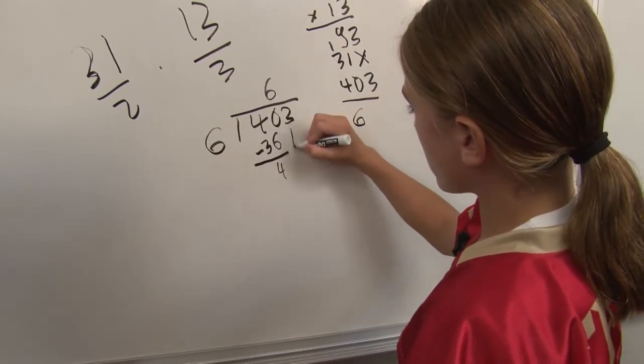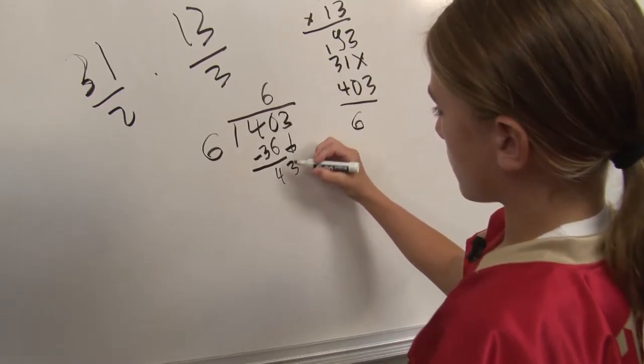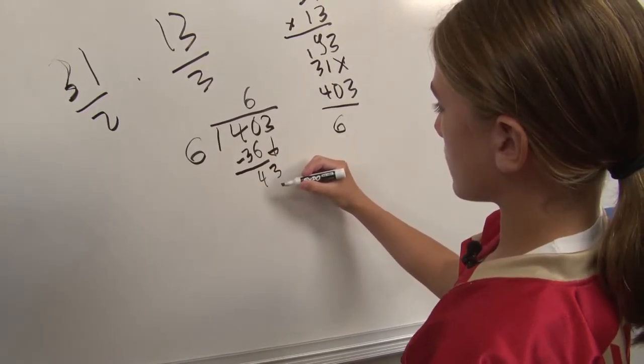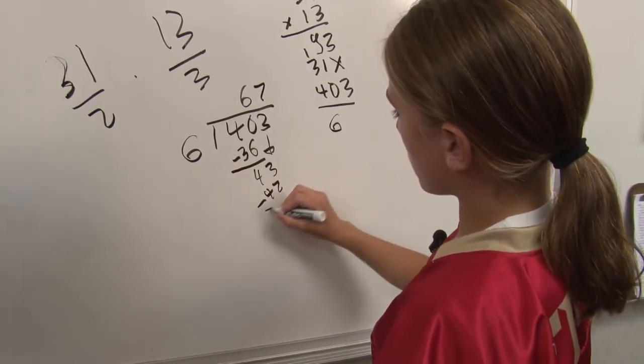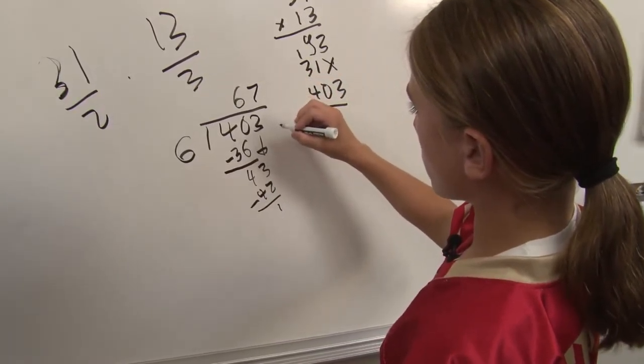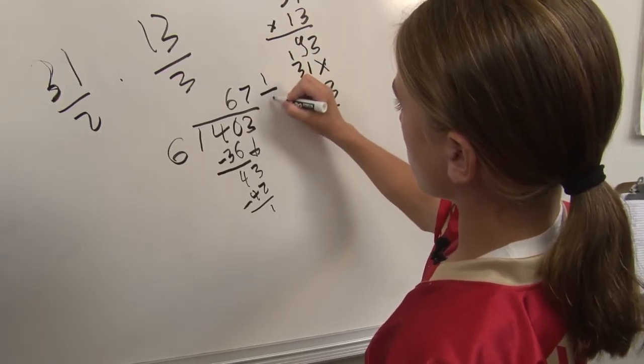Okay. So subtract, that would be 4. Bring down the 3. And 6 times 7 would make it into 42. There you go. And subtract that, and you would have 1, but you wouldn't go to a decimal, you'd go to a fraction. So it would be 1 over 6.